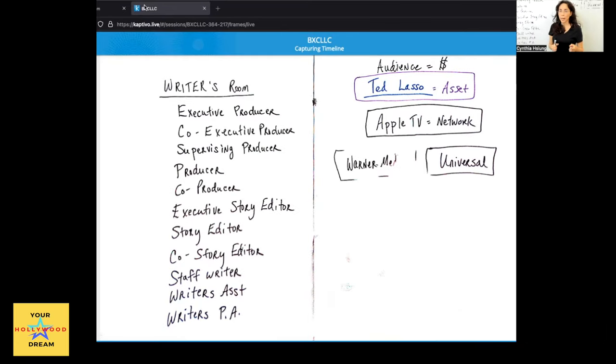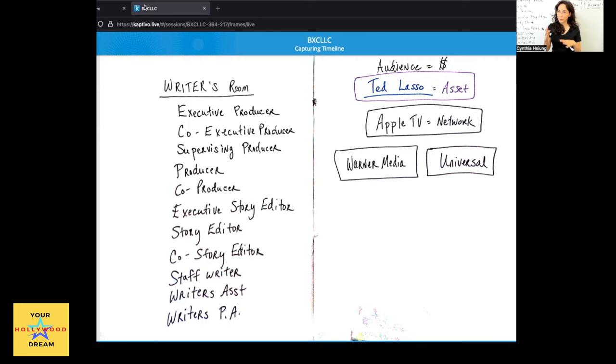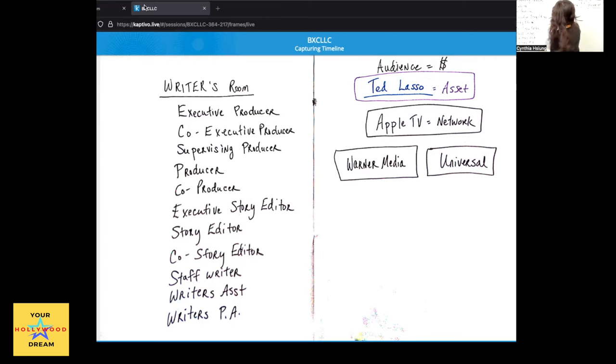In the case of Ted Lasso there were two different parts to that. There was a reason for that, for the most part though, because you had different entities come into play that made up the whole picture. The series started when you had the entity of Jason Sudeikis teaming up with Bill Lawrence. There are many other players involved in this by the way, I'm just simplifying it for purposes of being able to outline it on the whiteboard here. So it was Bill Lawrence who was the executive producer showrunner who had a deal with Warner Media, and that's why you have Warner Media here.